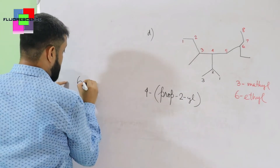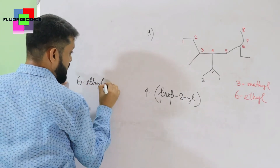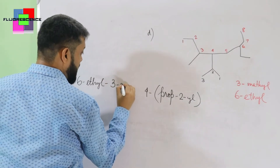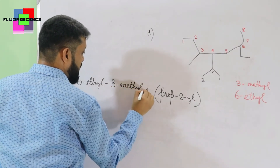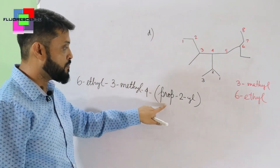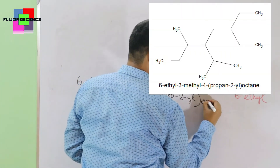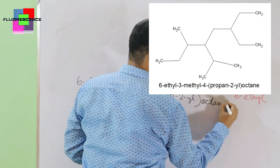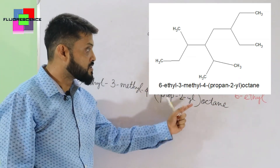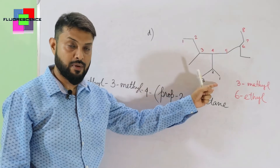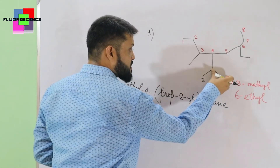So the full IUPAC name becomes: 6-ethyl, hyphen, 3-methyl, hyphen, 4-prop-2-yl octane. That is the first process of naming the branch of branching.